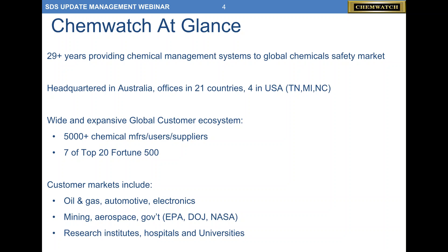A quick overview of ChemWatch: we've been in business almost 30 years, headquartered in Australia. We have four offices in the U.S. — two in Tennessee, Michigan, and North Carolina — and are a good solution for both global and domestic needs. We have about 5,000 chemical manufacturers, users, and suppliers in our customer ecosystem, and seven of the top 20 Fortune 500 companies use ChemWatch. Our markets include oil and gas, automotive, electronics, mining, aerospace, government entities, research institutes, hospitals, and universities.